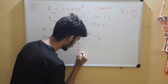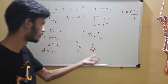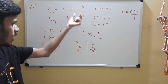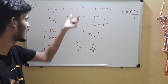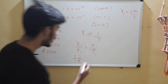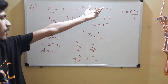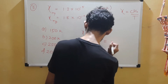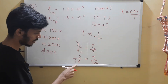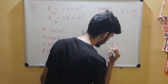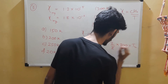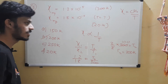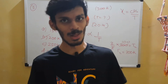Using χ₁/χ₂ = T₂/T₁ (inverse relation), substituting: 1.2/1.8 = T₂/300. The 10⁻⁵ cancels in the ratio. Solving: T₂ = (1.2/1.8) × 300 = (2/3) × 300 = 200 K. So option B, 200 K, is the correct choice — simple use of Curie's law.